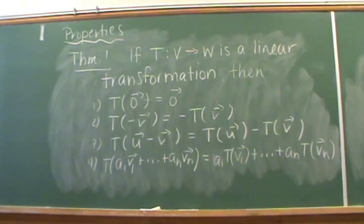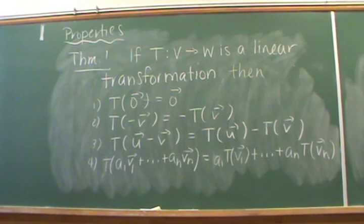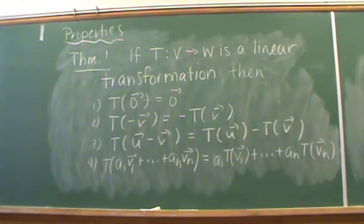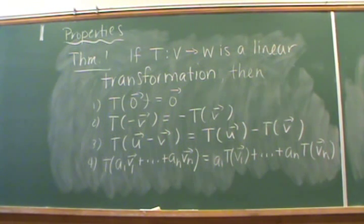Let's begin by taking a look at four nice properties of linear transformations. If T is a linear transformation from a vector space V to a vector space W, then the following four things are true. First, T maps the zero vector of V to the zero vector of W. Second, T of negative v equals negative T of v, so we can factor out that minus one. Property three allows us to break up a subtraction inside our linear transformation. And finally, property four generalizes to a series of n vectors: T of the linear combination a1v1 up to anvn can be rewritten as a1T(v1) up to anT(vn), where all a's are real or complex numbers and v1 through vn are vectors in V.